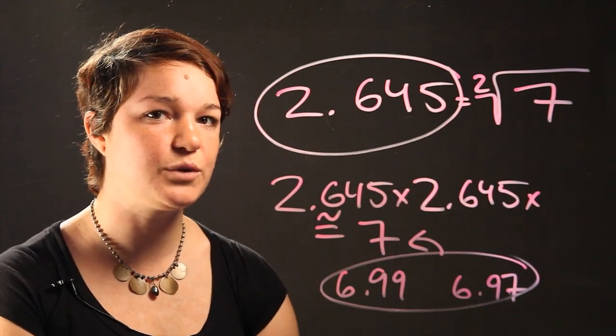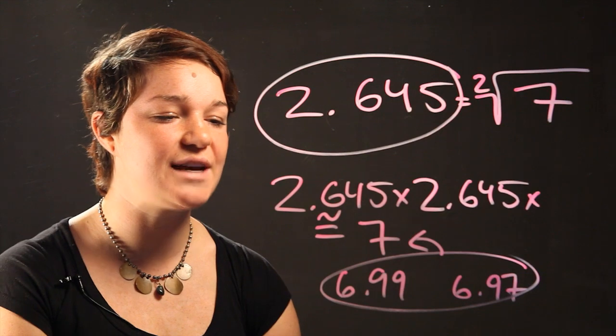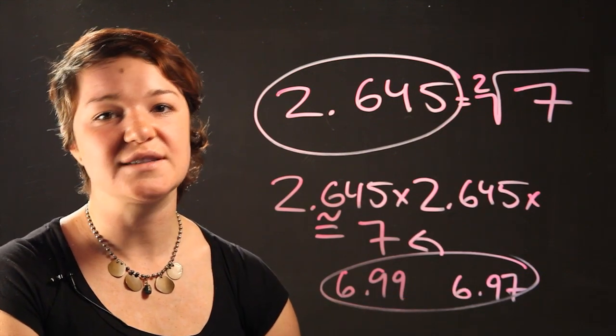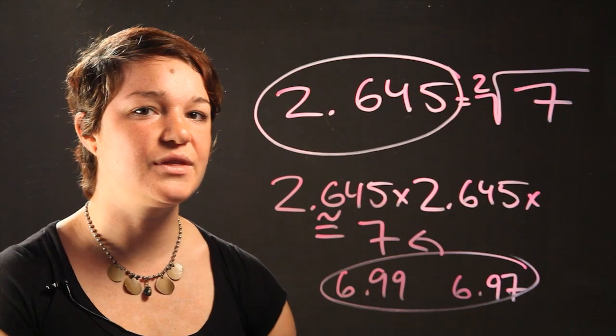But it's okay as long as when you multiply the number by itself several times and it comes out to a number that's close enough to a whole number, then you can stop.